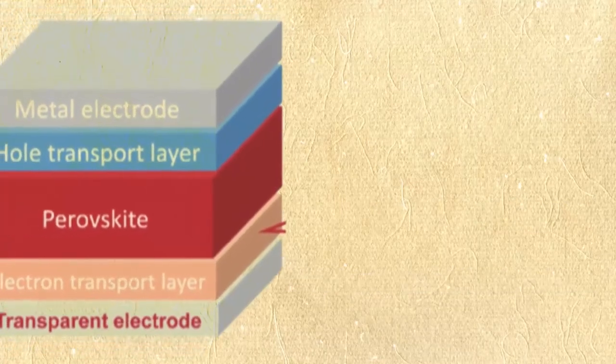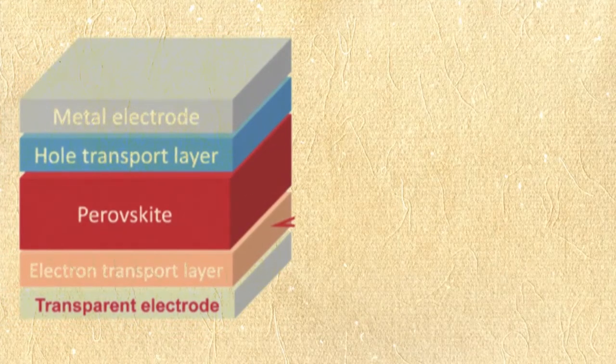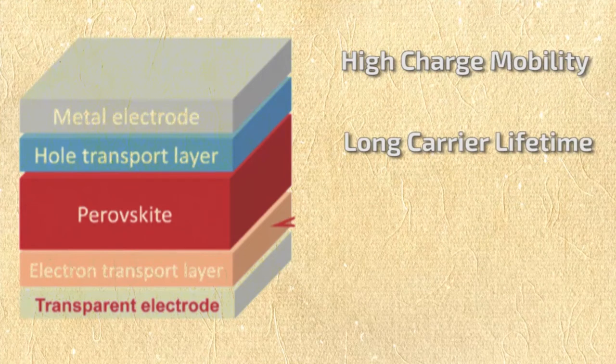The Perovskite materials can be used not only as light absorbing layer, but also as an electron transport layer because of the high charge mobility, long carrier lifetime, and long carrier diffusion distance.